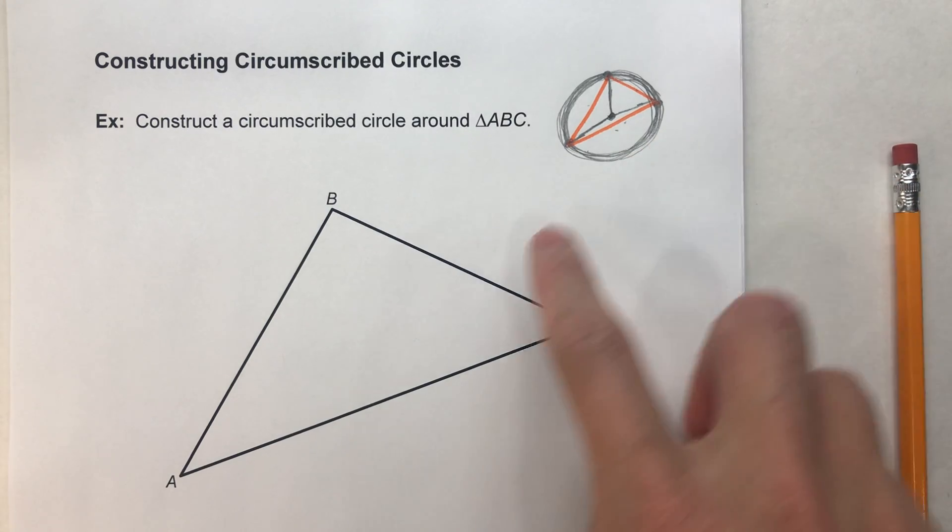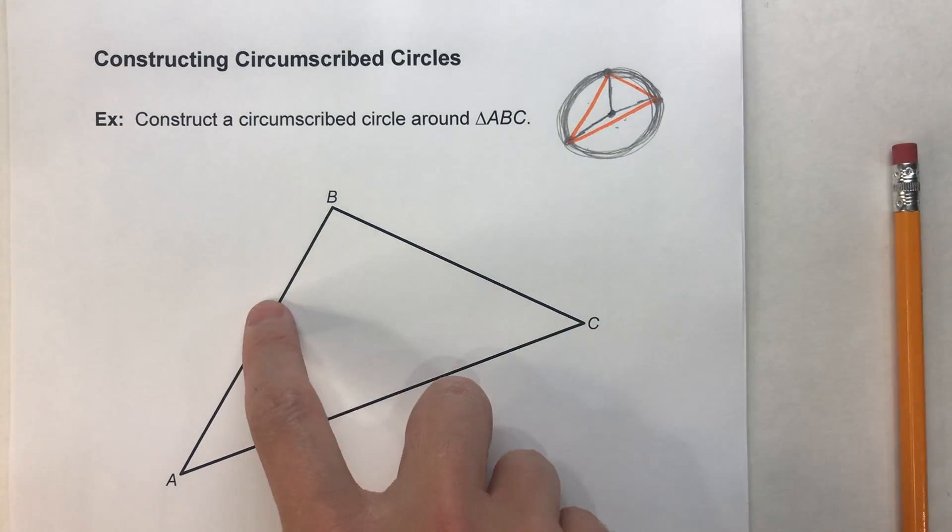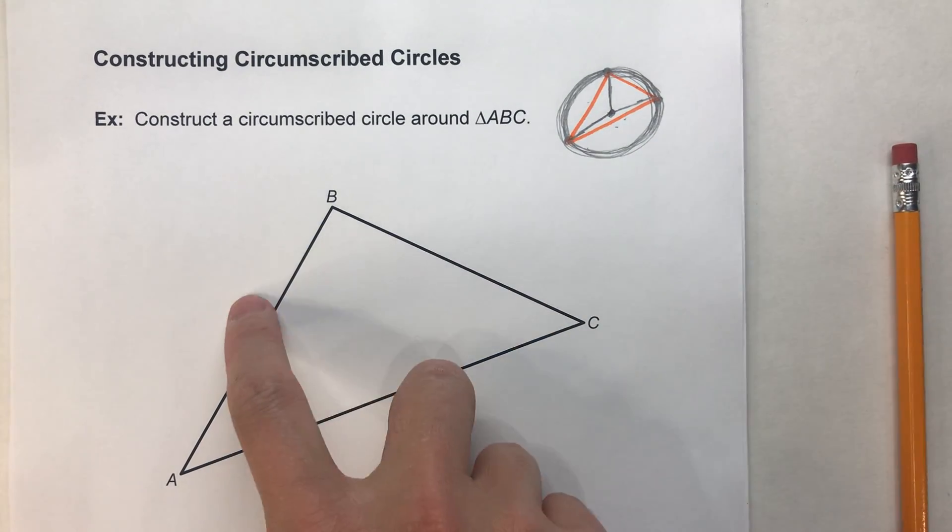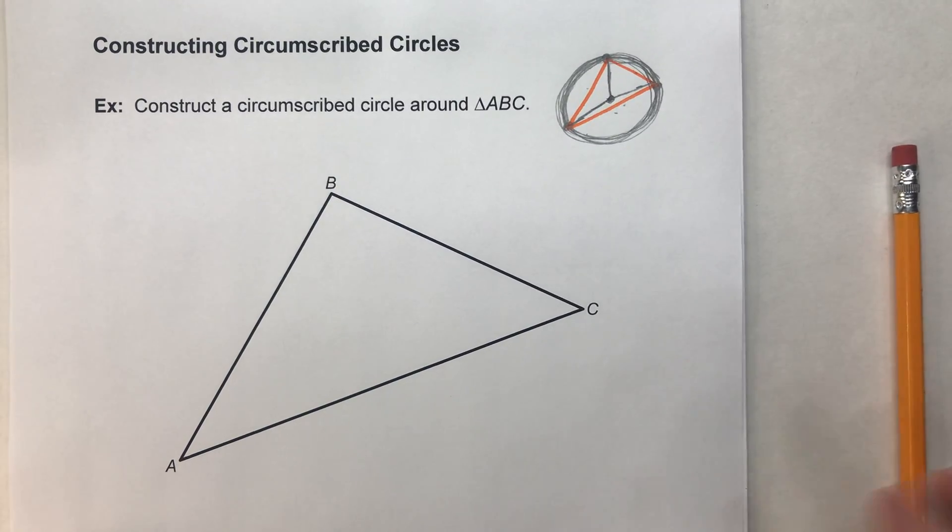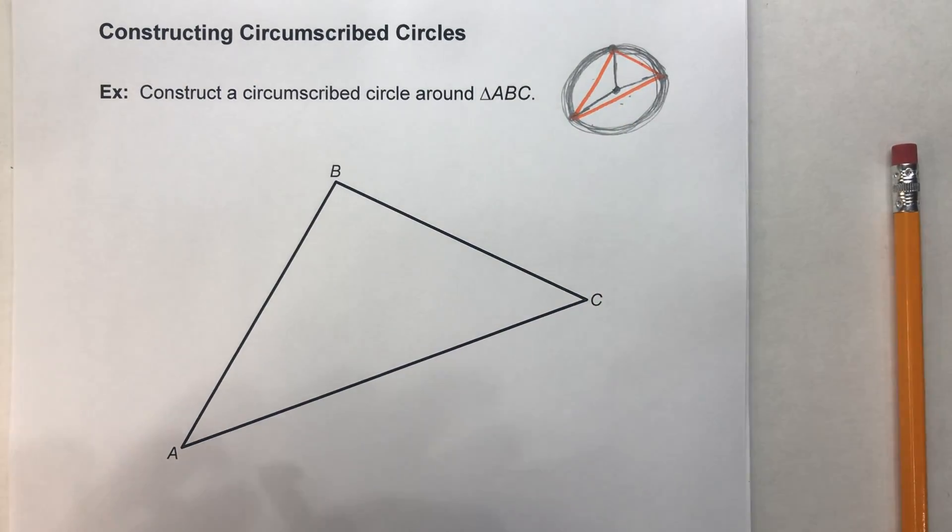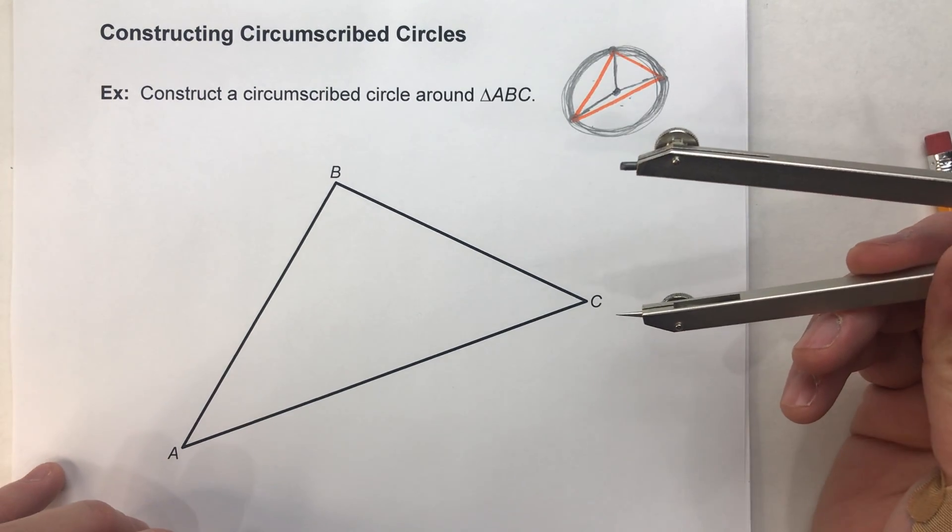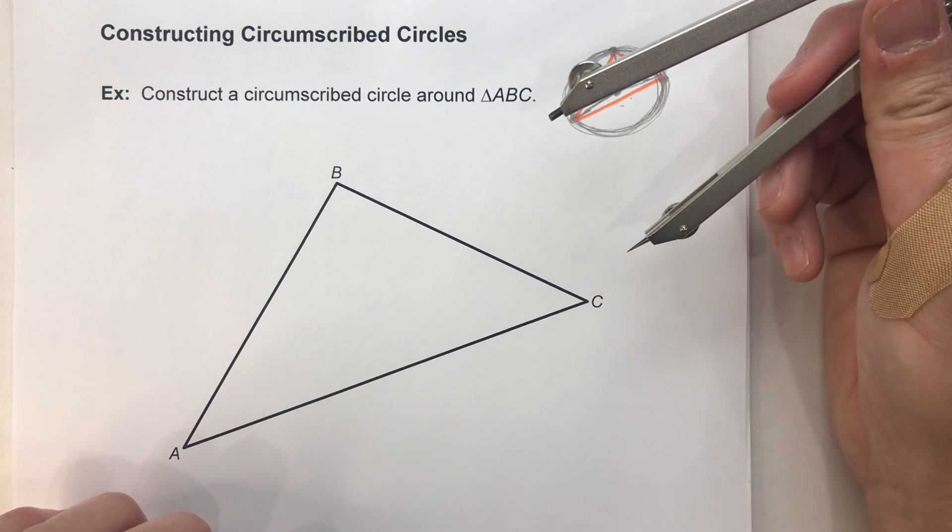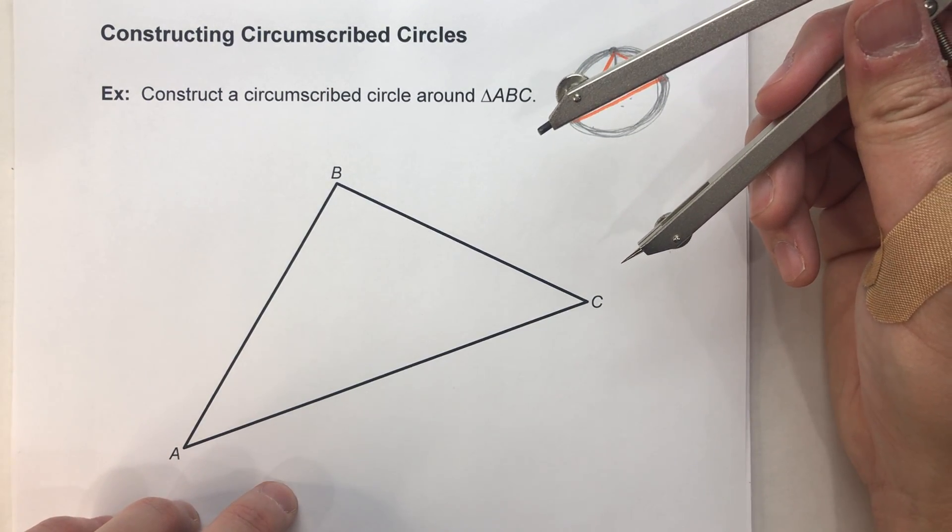To construct our circumscribed circle, we're going to have to construct the perpendicular bisector of all three sides of this triangle. So, we're going to have to be accurate, because being a little bit off is going to make our circle a little bit off, and it's going to be really obvious if your circumscribed circle is off.